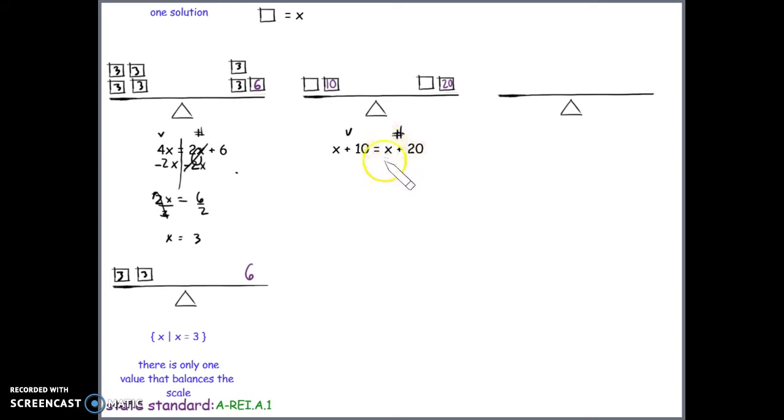So we've got an x right here. How do I get rid of an x? I subtract an x, and I make sure that I keep the equation equal or the scale balanced by doing it to both sides. When I simplify, we know that x minus x is 0, so we're just left with 10 here. We know that x minus x is 0, so we're just left with 20 here. And now what we have is an equation that doesn't even have a variable. And so this is one of the features of linear equations that are special cases: equation without a variable.